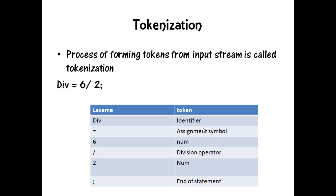What is tokenization? The process of forming tokens from the input stream of characters is called tokenization. Consider the example: div = 6 / 2. Look at the table — 'div' as identifier, '=' as assignment symbol, '6' as num, '/' as division operator, '2' as num, and ';' as end of statement.